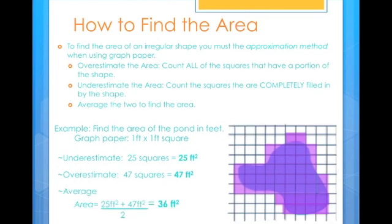Then, I want to find the average of the two, so I add 25 square feet to 47 square feet and divide by 2, and that gives me an area of 36 square feet.